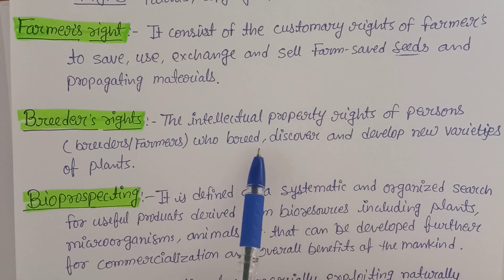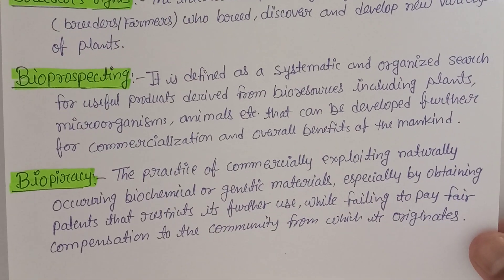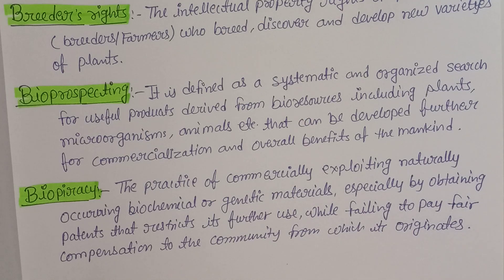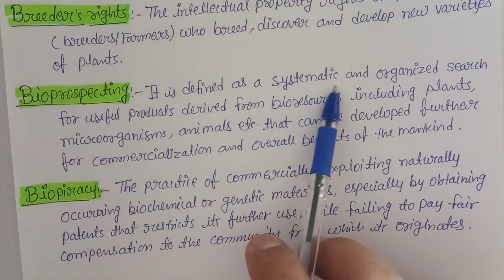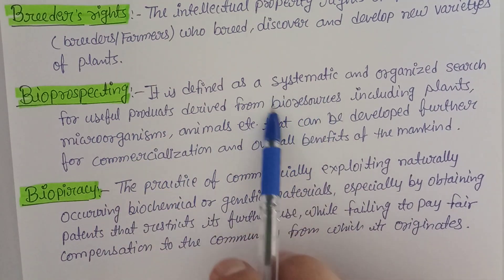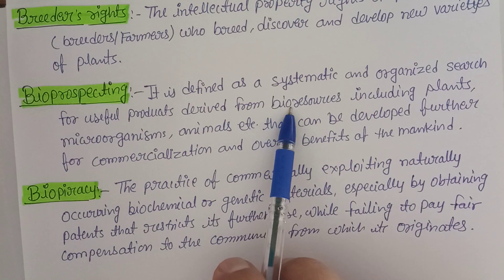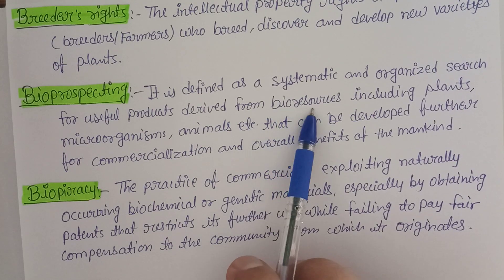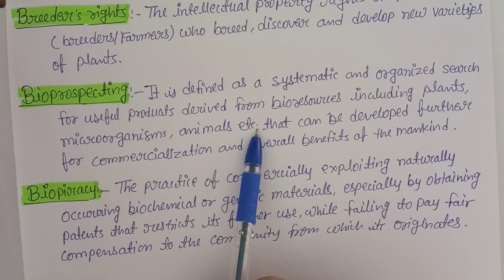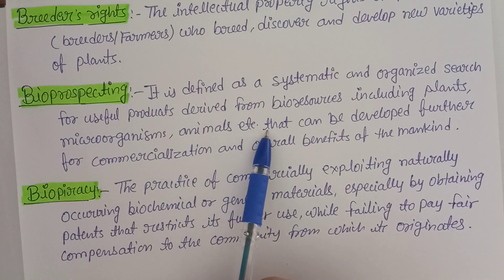There are a few more terms we need to understand, like bioprospecting. Bioprospecting is defined as a systematic and organized search for useful products derived from bioresources. 'Bio' means living — so bioresources means living organisms, including plants, microorganisms, animals, and more.